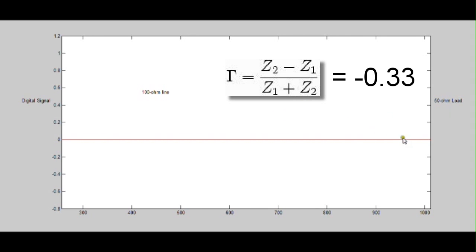So 50 minus 100 divided by the 50 plus 100, or minus a third volt reflection.